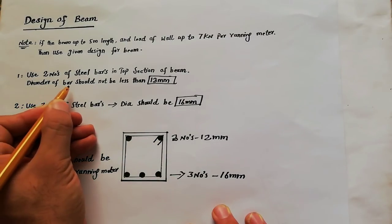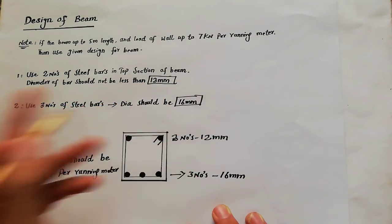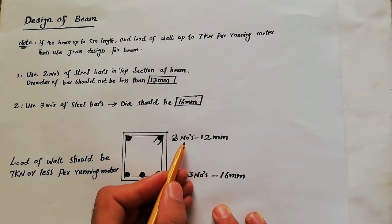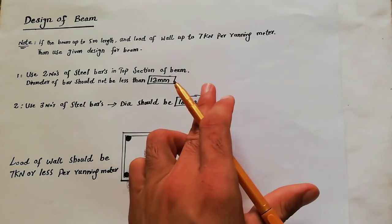The diameter of the bar should not be less than 12 millimeter. So the dia of the bar should be 12 millimeter, and use two numbers of steel at the top section of the beam if your load is 7 kilonewton per running meter or less.